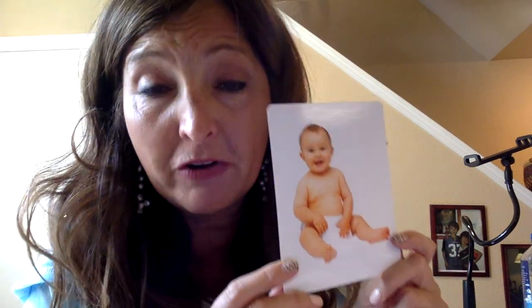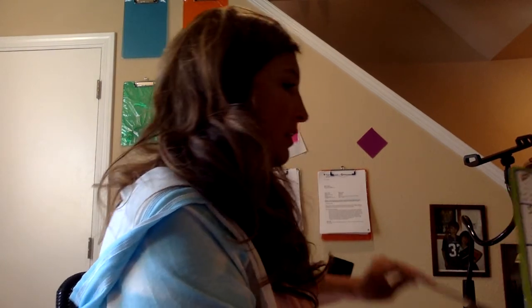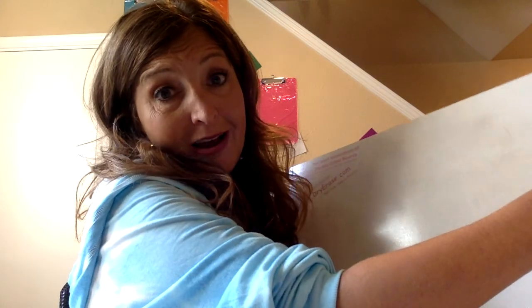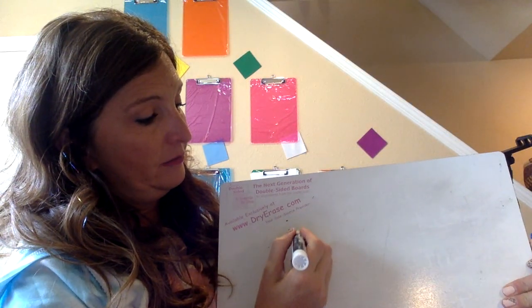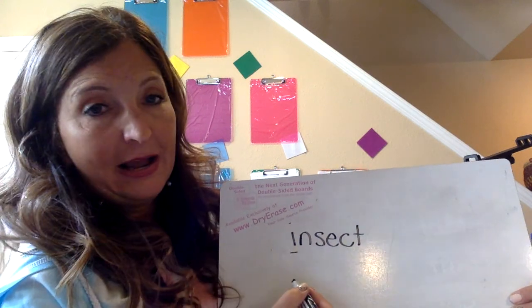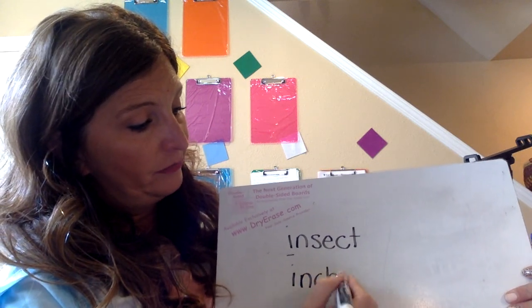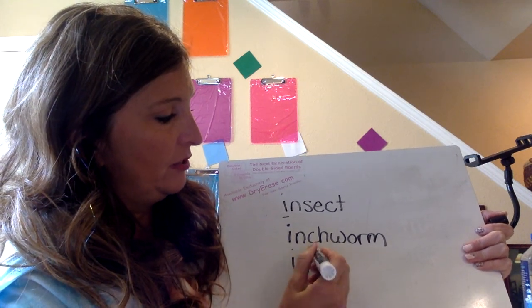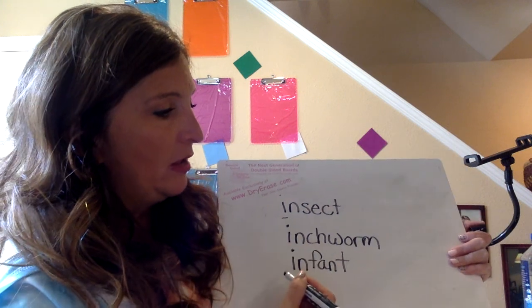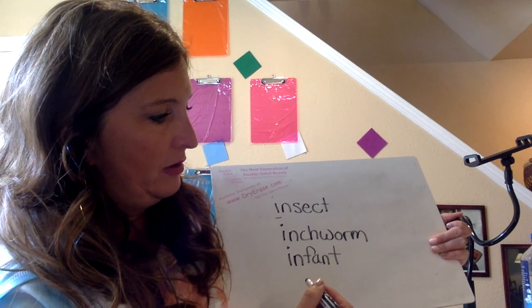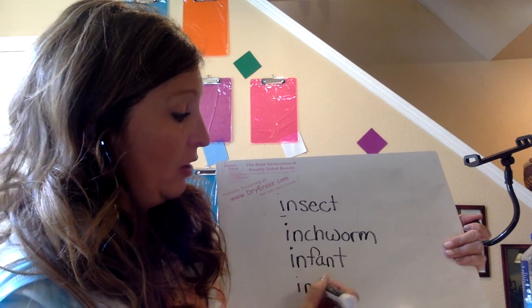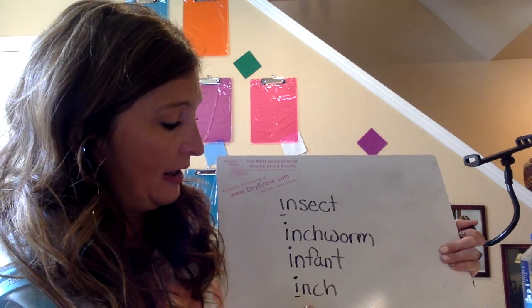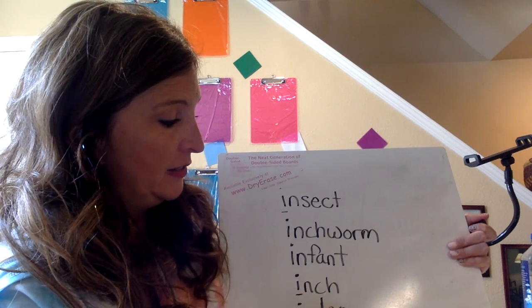The last thing I have that begins with the letter I is an infant. Infant is a fancy word for baby. Baby begins with a B, but infant begins with an I. Let's take a look at some of the words we've talked about that begin with I: insect, inchworm, infant, inch on a ruler, and igloo. Remember, an igloo is like a house made out of ice and snow.